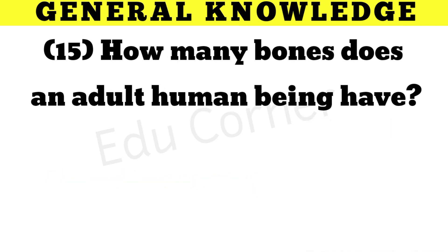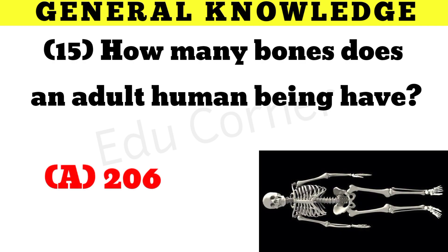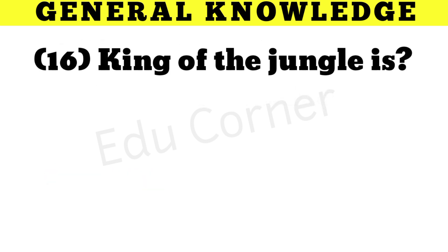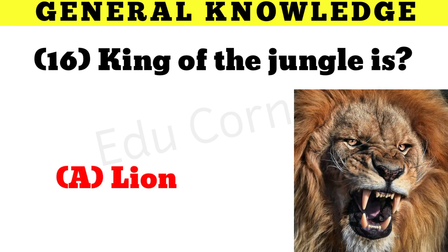How many bones does an adult human being have? 206. Which animal is the king of the jungle? Lion.